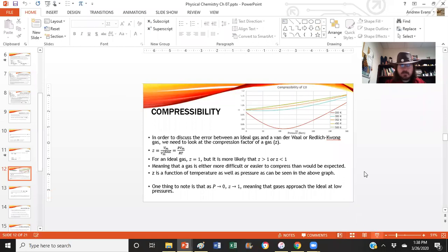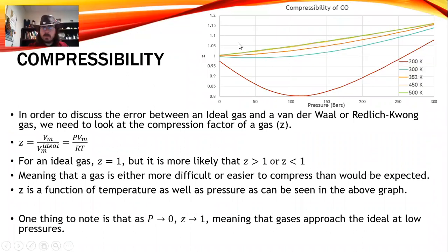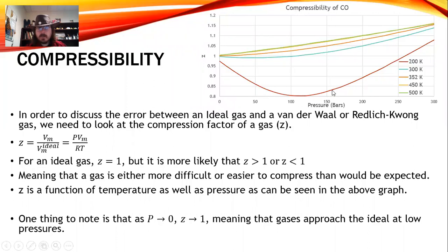Let's look at a gas's compressibility — how well will a gas compress compared to the expected amount? If we look at the compressibility of just CO₂, you notice there's a nonlinear compressibility at 200. The compressibility shifts down at high pressure and then goes back up. As we increase the temperature, this swoop gets less and less until we get almost linear compressibility.